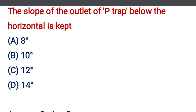The slope of the outlet of the P-trap below the horizontal is kept — option A: 8 degrees, option B: 10 degrees, option C: 12 degrees, option D: 14 degrees. The correct answer is option D, 14 degrees.